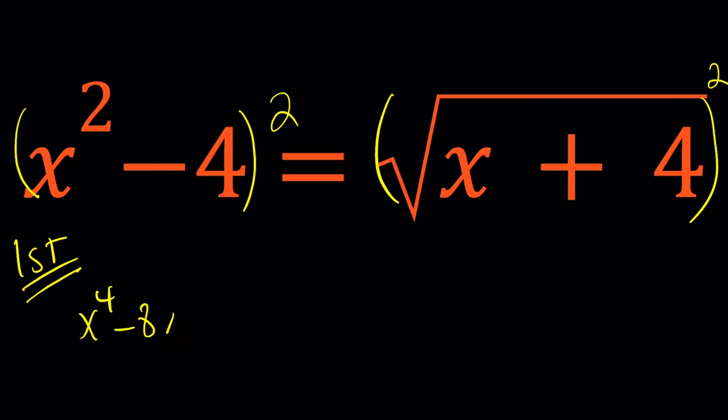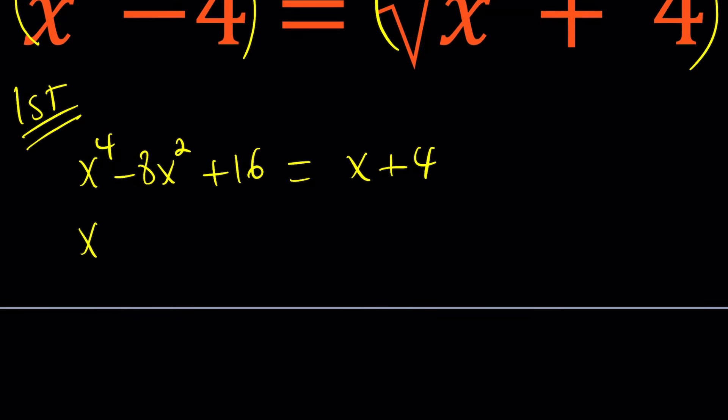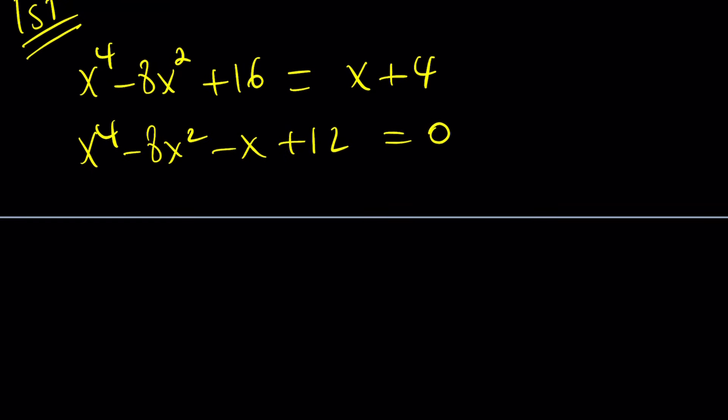So x to the 4th minus 8x squared plus 16 equals x plus 4. And then x to the 4th. Now I can combine, put everything together and get a quartic like this. But that's actually not what I want to do. I want x to the 4th on one side and everything else on the other side. And you'll see in a little bit why that's the case. Let's go ahead and do that.